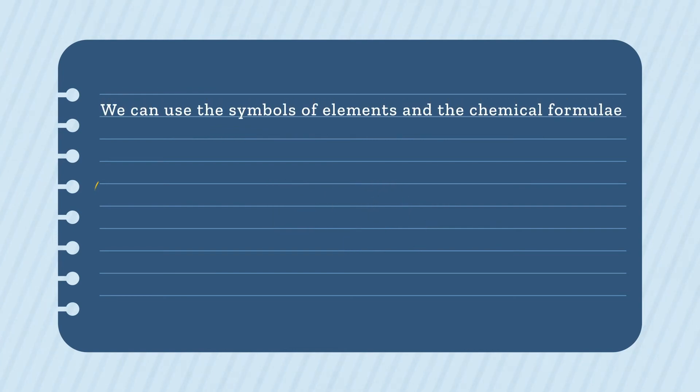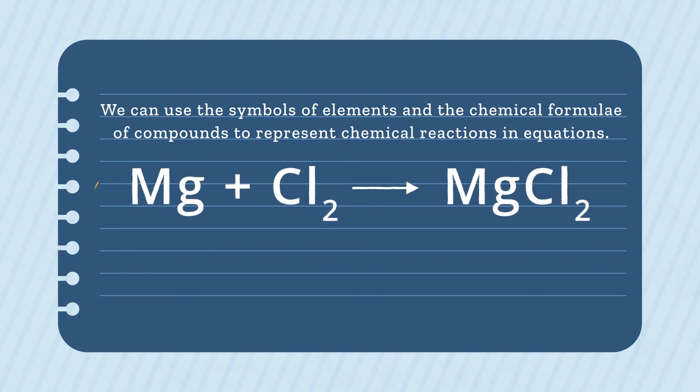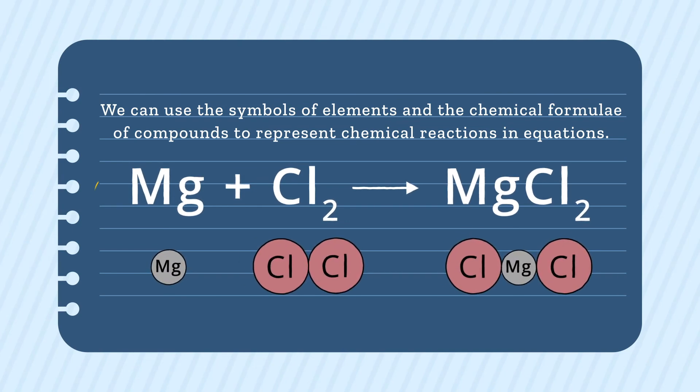We can use the symbols of elements and the chemical formulae of compounds to represent chemical reactions in equations. This equation represents the chemical reaction in which magnesium atoms become chemically bonded to chlorine atoms to make a compound. The new compound that has been made contains two chlorine atoms for every one magnesium atom, so it has the chemical formula MgCl2. This compound is called magnesium chloride.